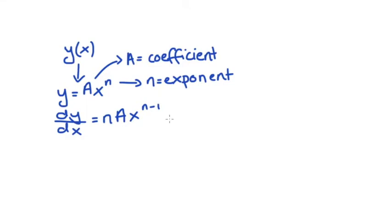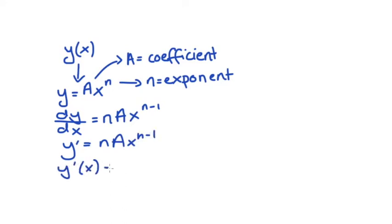If your function is almost in this form but there is no coefficient on the variable — so no a — the rule still works. We can just think about it as if a is equal to one and apply the rule with this in mind. It's worth noting that dy/dx might also be notated y-prime or y-prime-x; there are a few different notations out there. If you're confused about the notation, it's best to ask your teacher directly.